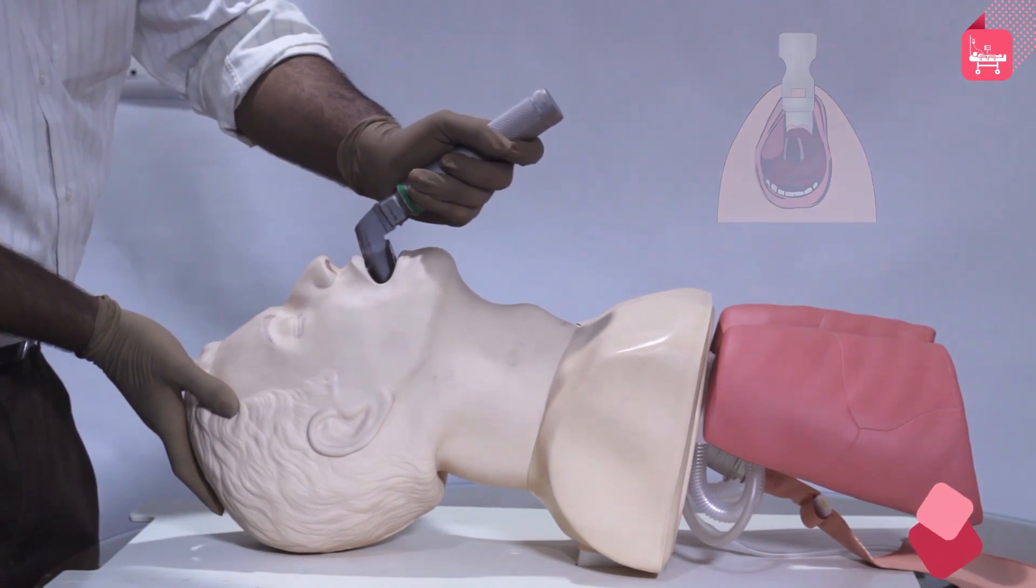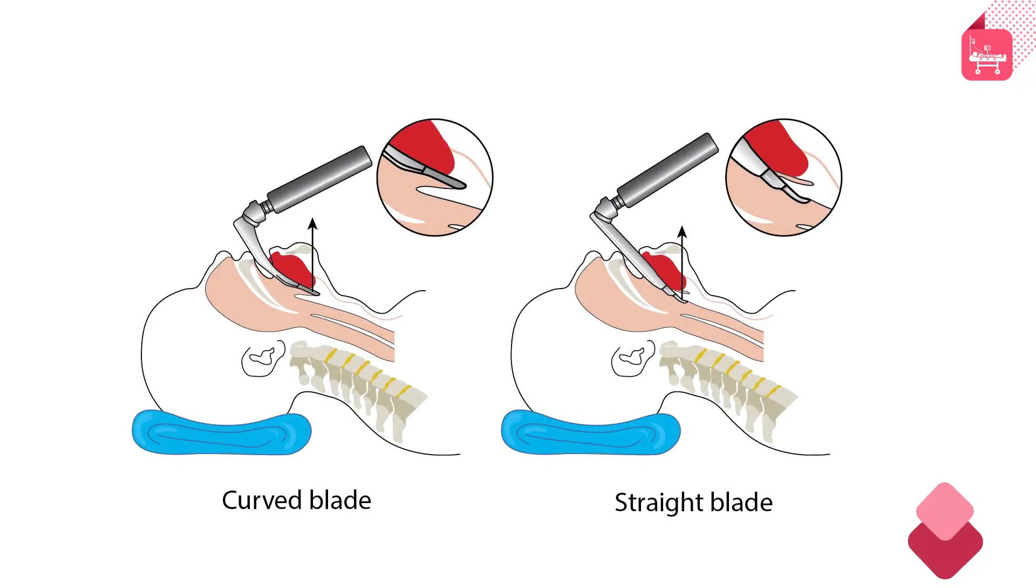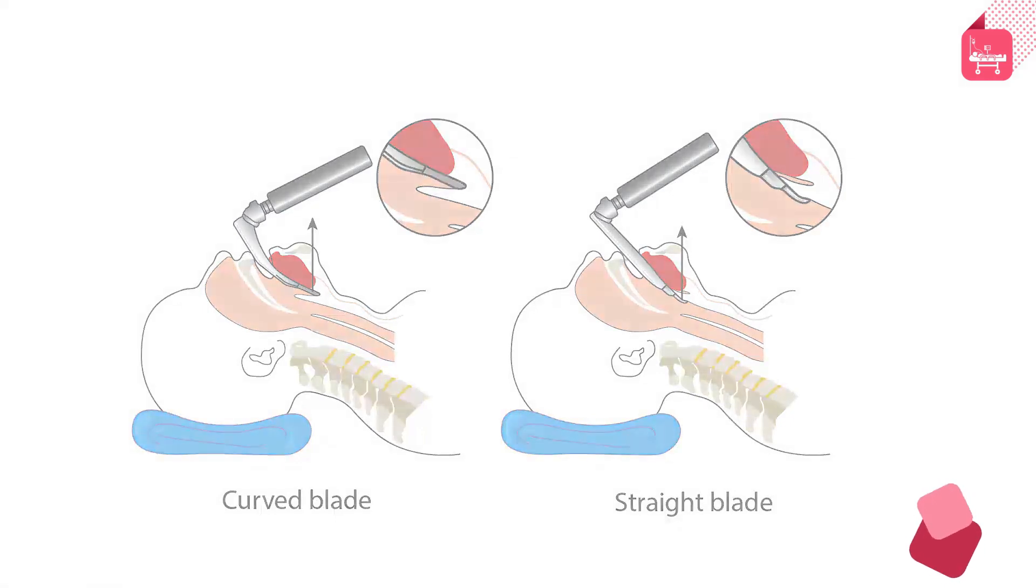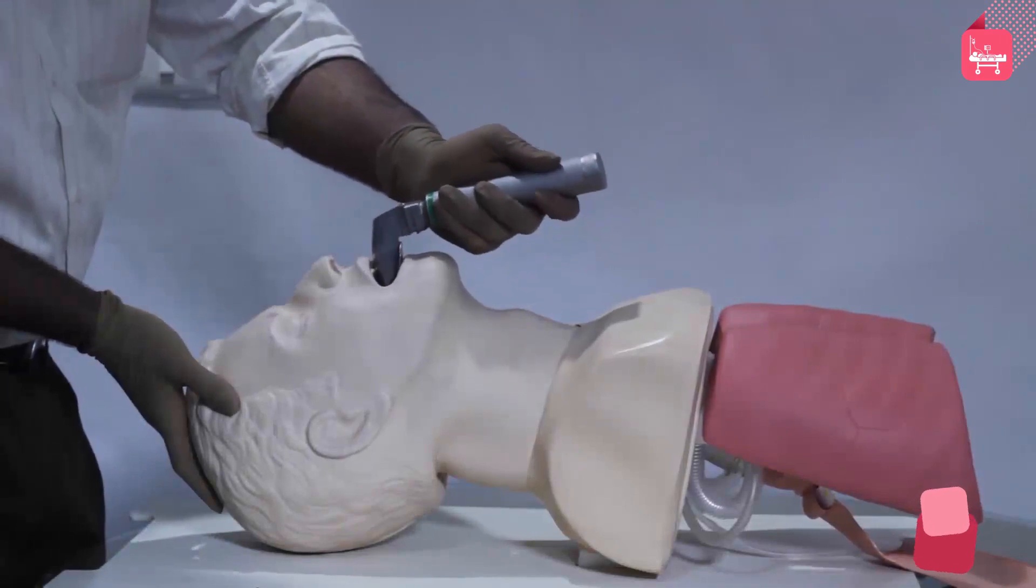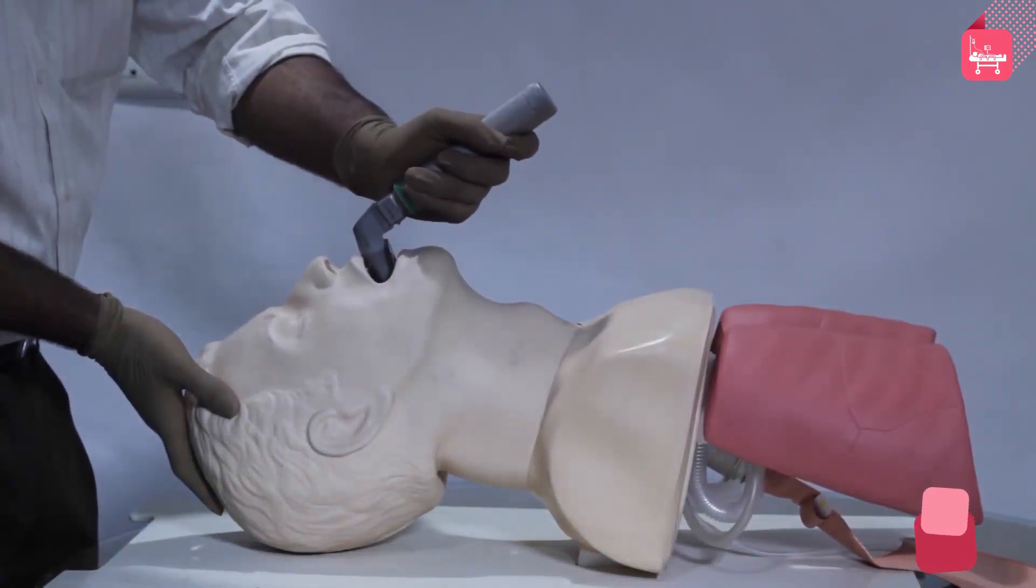When using a curved bladed laryngoscope, gently advance the tip of the laryngoscope blade into the vallecula between the base of the tongue and the epiglottis. When using a straight bladed laryngoscope, advance till it is behind the epiglottis. Do not use the laryngoscope as a lever, but lift it away from you. Lift the tongue, soft tissues, and jaw forward.